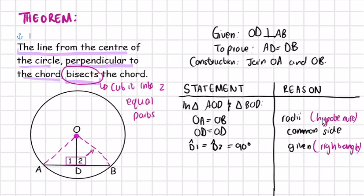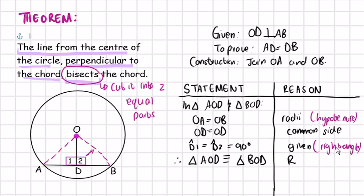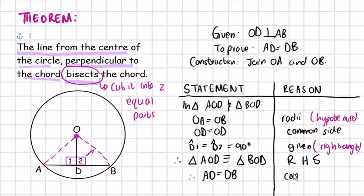Now we have three things being equal: the hypotenuse, a side, and a right angle. This concludes that triangle AOD is congruent to triangle BOD, and the reason is right-angle, hypotenuse, side (RHS). Because these triangles are congruent, all their corresponding sides are equal. Therefore AD is equal to DB, and the reason is congruent triangles. And that's the proof of this theorem.